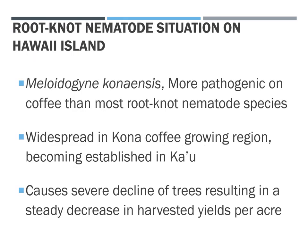So what's the root-knot nematode situation on Hawaii Island? We have a nematode called Meloidogyne konaensis, which is more pathogenic on coffee than most root-knot nematode species. It's widespread in the Kona coffee growing region, and it's becoming established in Kau. It causes severe decline of trees, resulting in a steady decrease in harvested yields per acre over time.